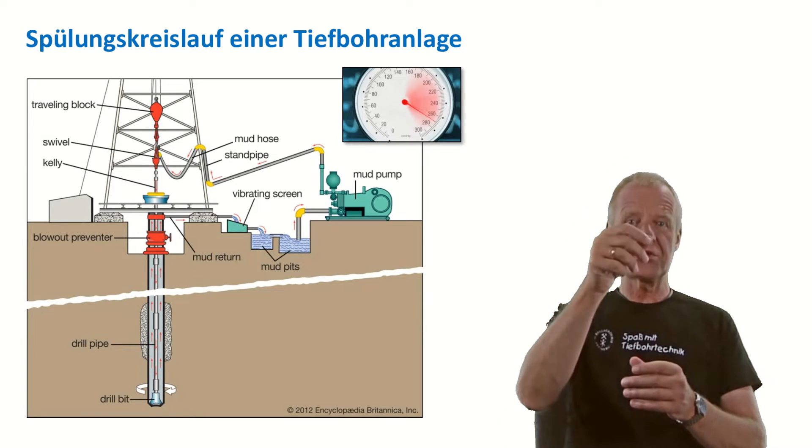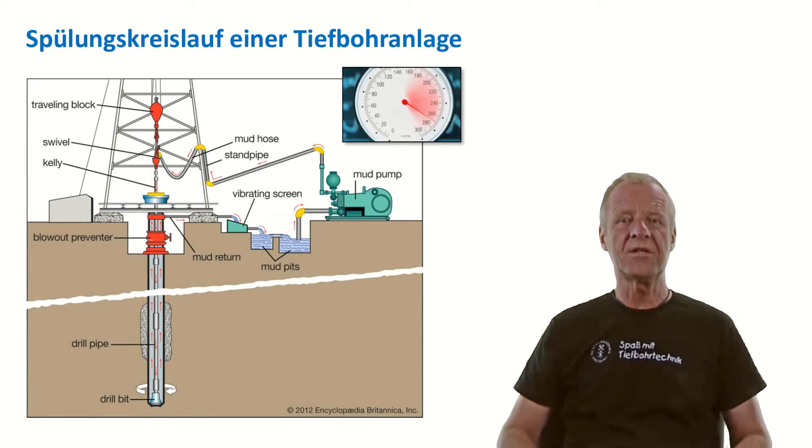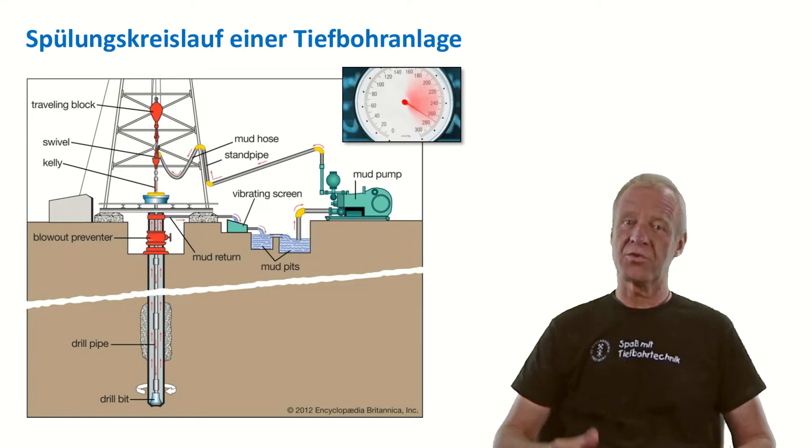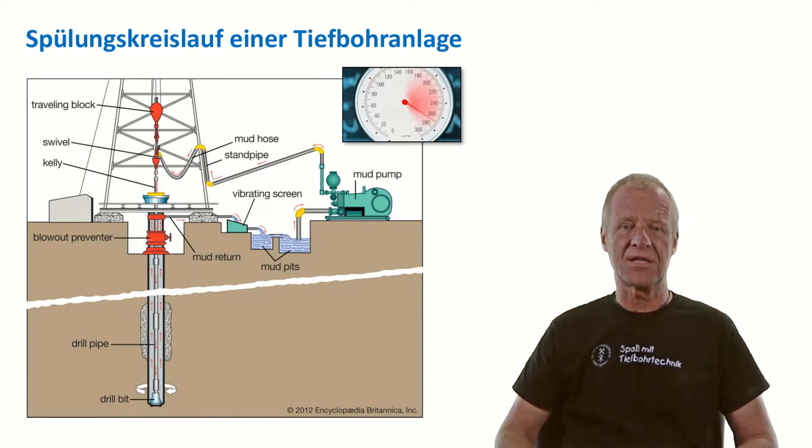First it travels down several kilometers into the tiny drill string, then back up to the surface through the narrow annulus. That is why the pumps need to provide very high pressure to pump enough mud through the system and to keep the borehole clean and in good shape.